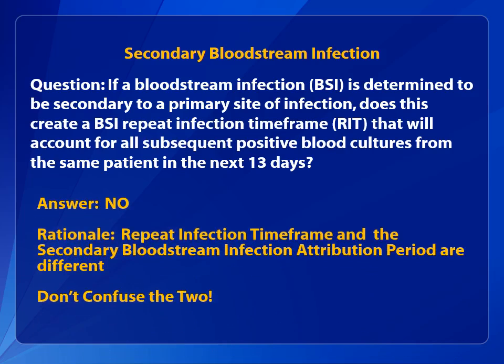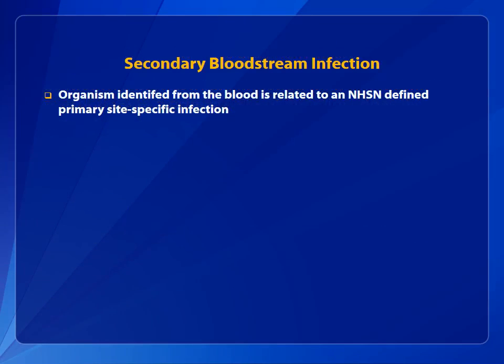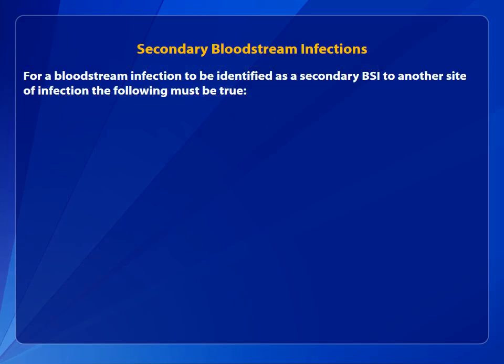The repeat infection time frame and secondary bloodstream infection attribution period are two distinct periods. For purposes of NHSN surveillance, a bloodstream infection is secondary if the organism identified from the blood is related to an NHSN-defined primary site-specific infection. For a bloodstream infection to be identified as secondary BSI, all of the following must be true.